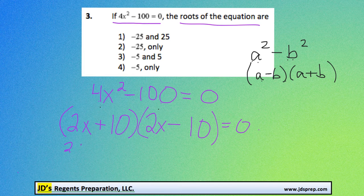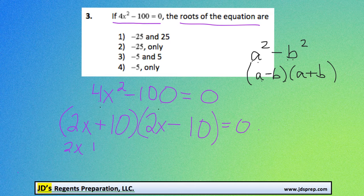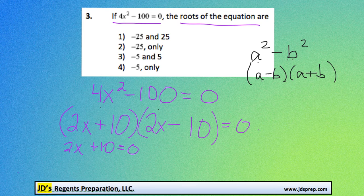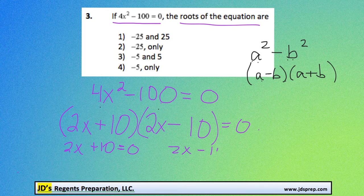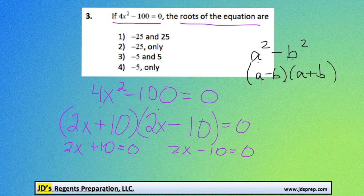So now if we set 2x plus 10 to be equal to 0, and 2x minus 10 equal to 0, we can solve for x in both of these situations.